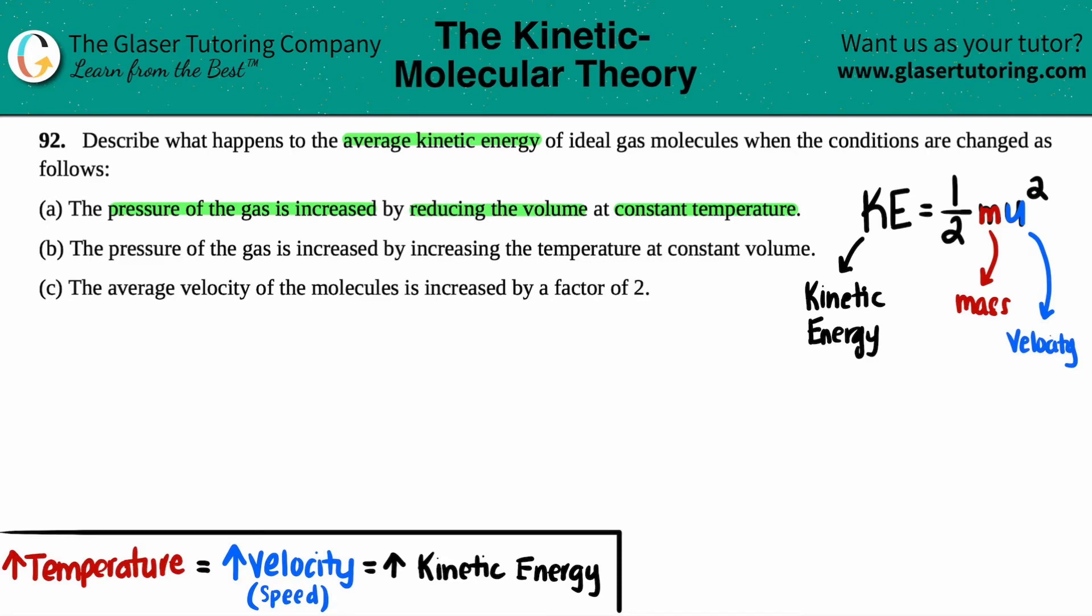In physics, when you guys get to physics after this, generally physics is after chemistry on your educational journey, you will see that this would be MV squared. But for chemistry, I don't know why they use U. But we'll stick with U. If you want to use a V, go right ahead.